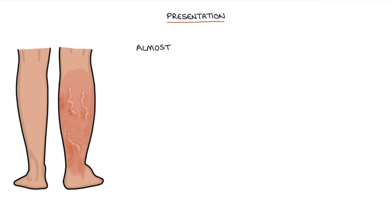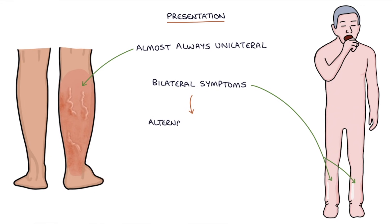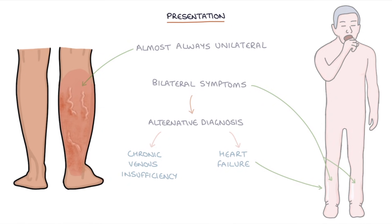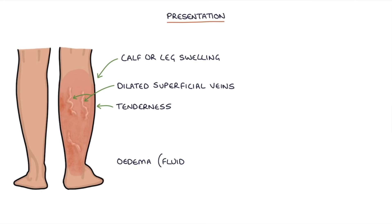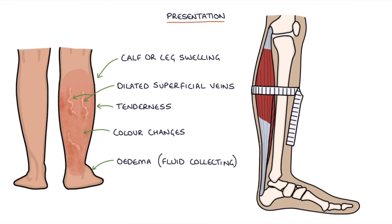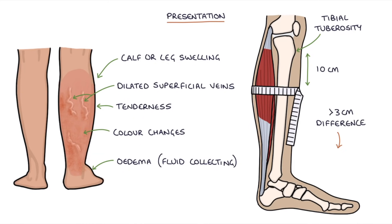Let's talk about the presentation of a deep vein thrombosis. DVTs are almost always unilateral. Bilateral symptoms are more likely to be due to an alternative diagnosis such as chronic venous insufficiency or heart failure. DVTs can present with calf or leg swelling, dilated superficial veins, tenderness to the deep calf, oedema, and colour changes to the leg. To examine for leg swelling, measure the circumference of the calf 10 centimetres below the tibial tuberosity — more than a 3 centimetre difference between the calves is significant.